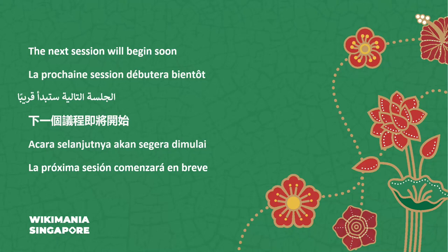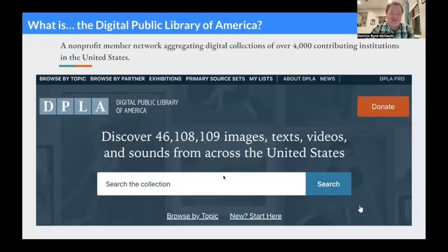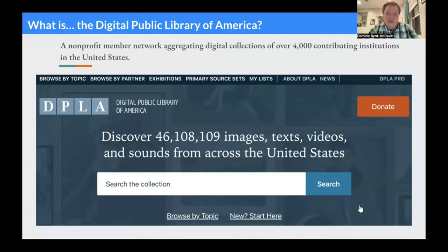My name is Dominic Bird-McDevitt. I'm the data and partnership strategist for DPLA. Just some quick background on what is DPLA. The Digital Public Library of America is a nonprofit member network that aggregates digital collections for over 4,000 contributing cultural institutions in the United States. It's essentially a search portal for searching across all the libraries and museums and archives in the United States.